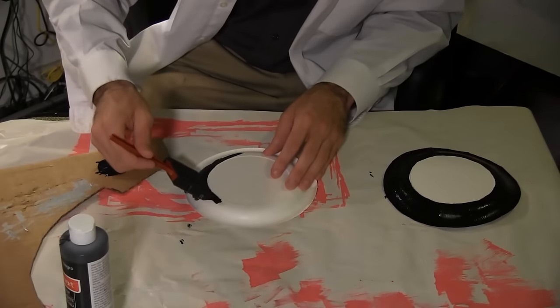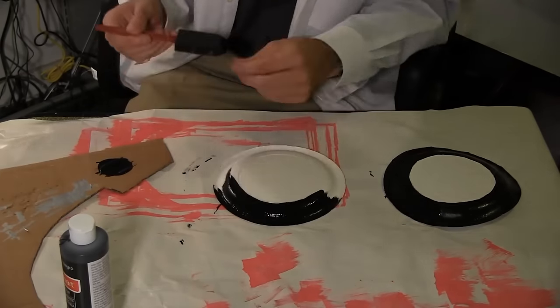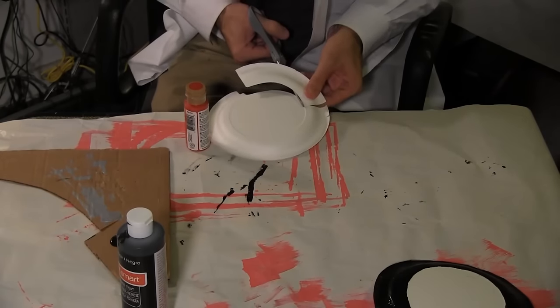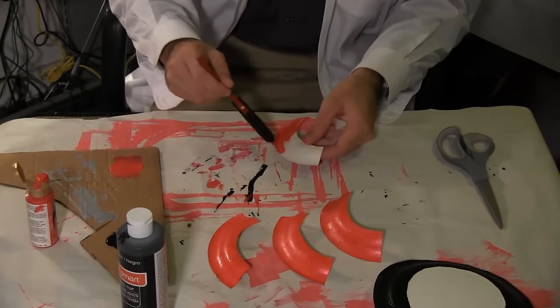Take two paper plates and paint the curved edges black. Using another couple of plates, cut off the edgings in 4 inch pieces and paint them red.